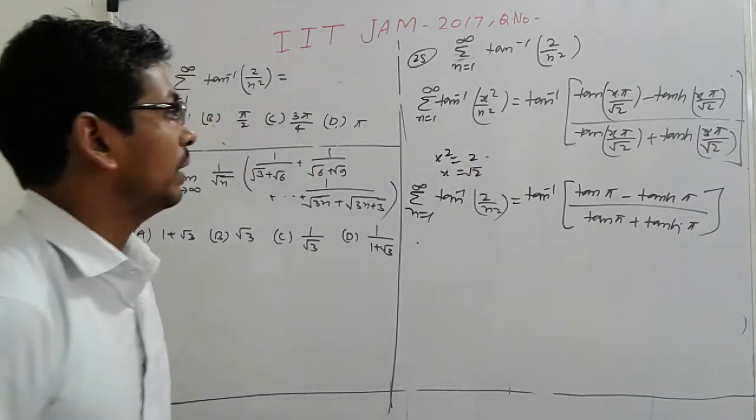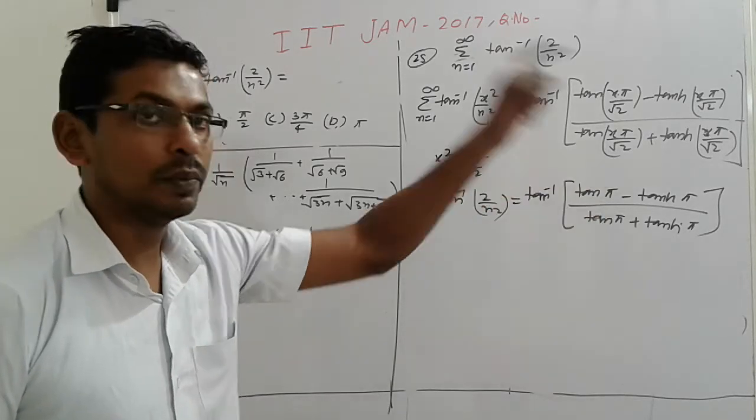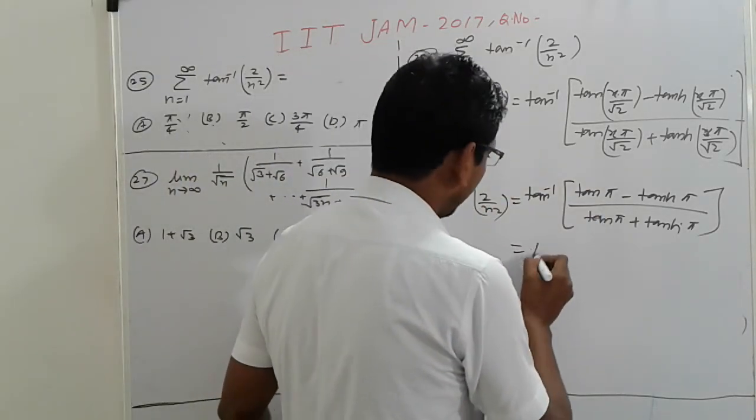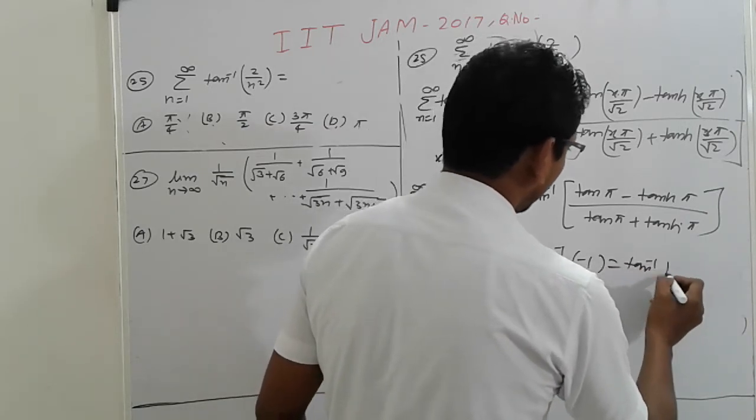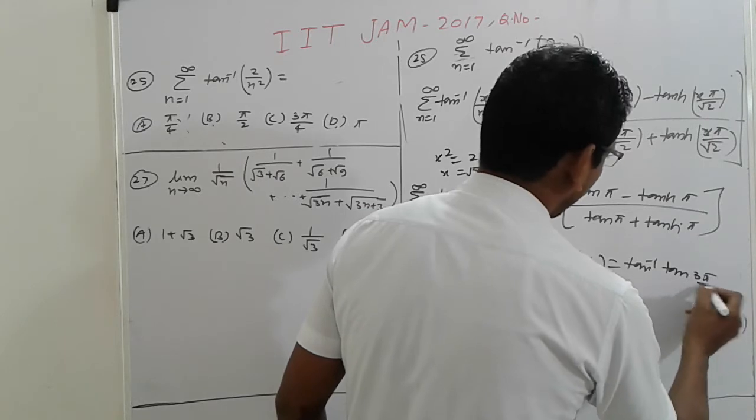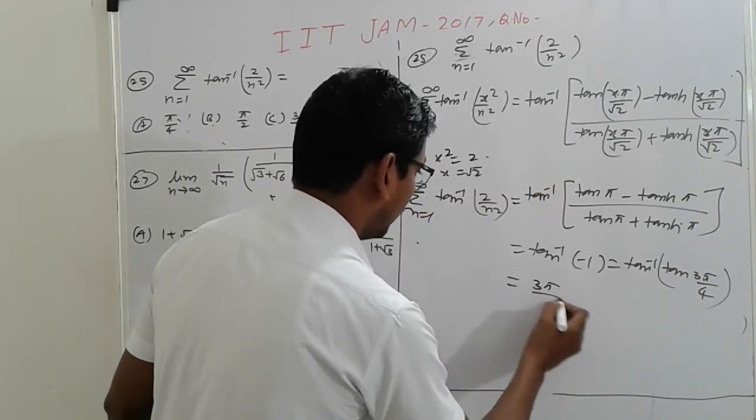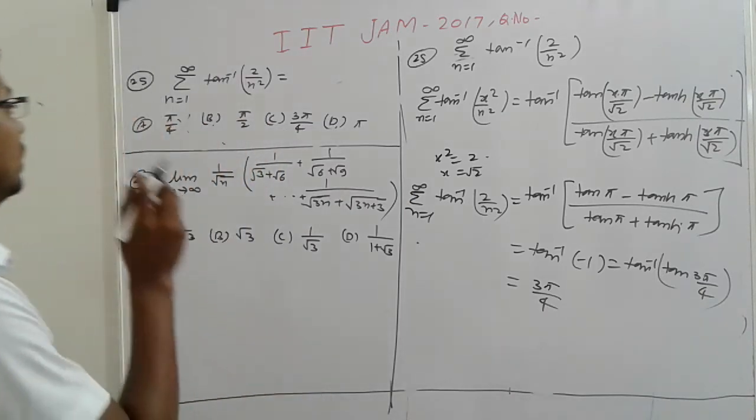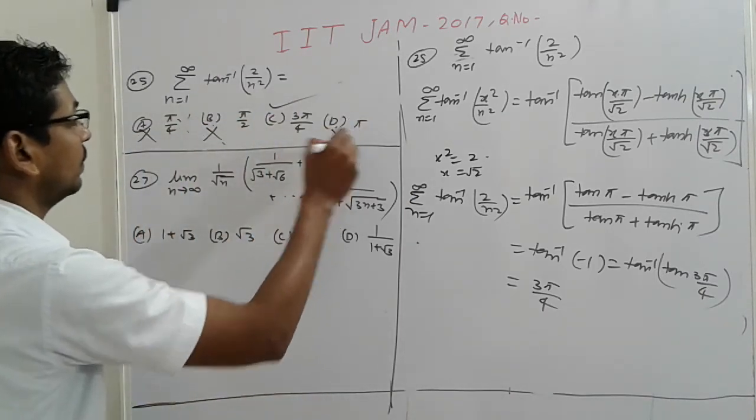So tan pi is 0, here 0 minus 1, so we get tan inverse minus 1. This is tan inverse tan 3 pi by 4, which is 3 pi by 4. So that is your answer: 3 pi by 4. Here cancel it, this is canceled.